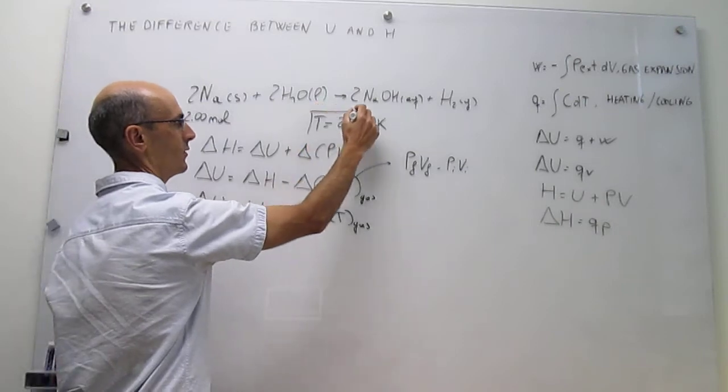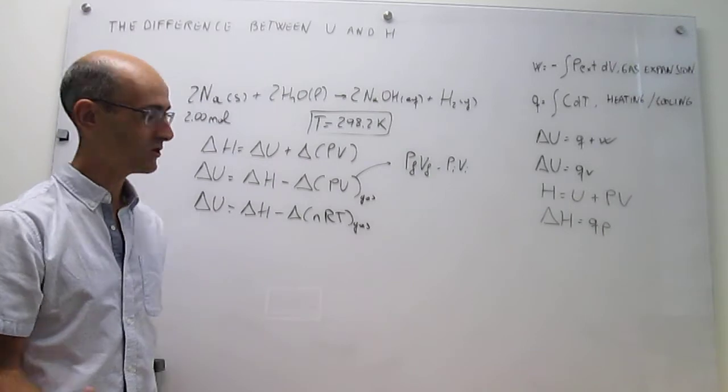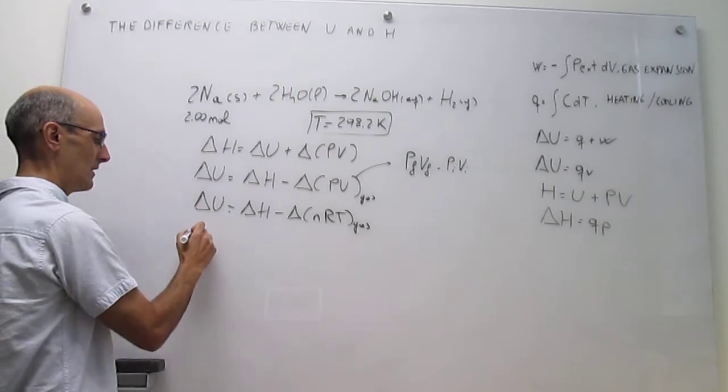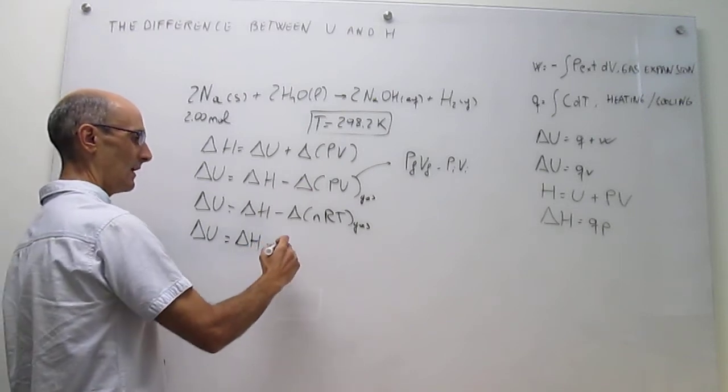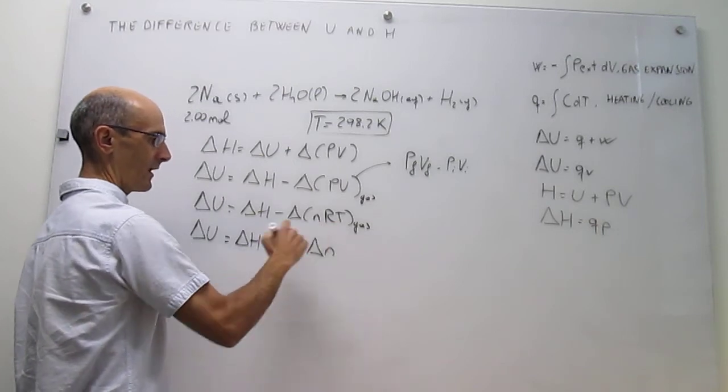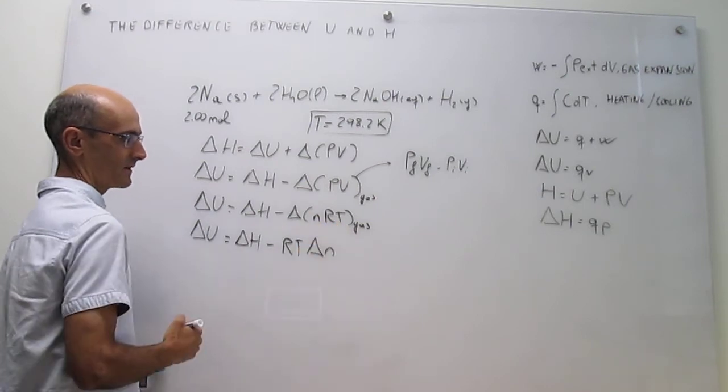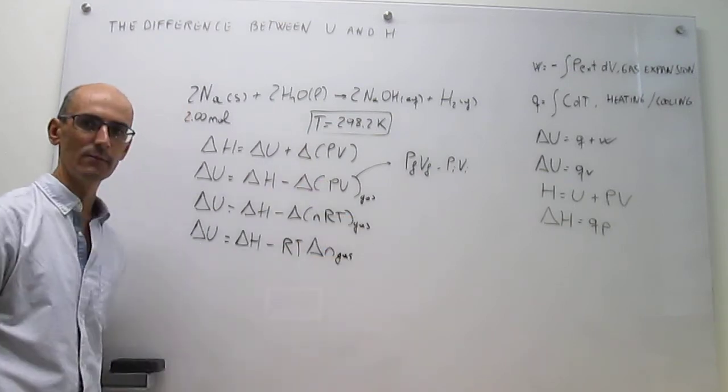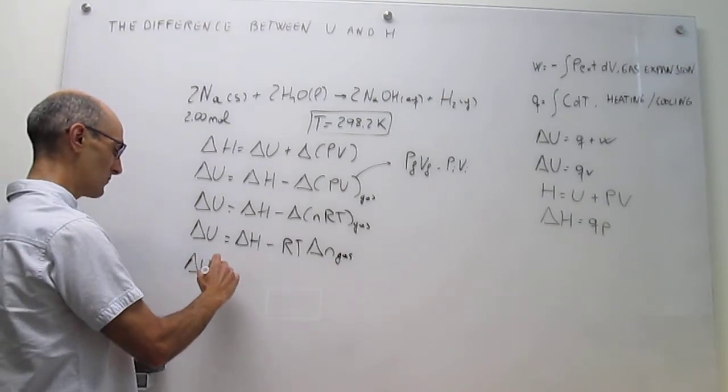In this particular case, we are running the reaction isothermally. That means the temperature does not change. If the temperature doesn't change, you can factor it out of that increment, and this turns into delta U equals delta H minus RT delta N. We are factoring out the constant R and the constant temperature out of these changes, and then you just have the delta N of the gas, the change of moles of gas.